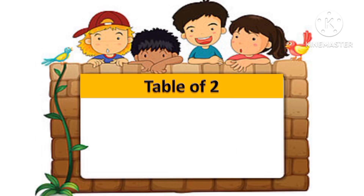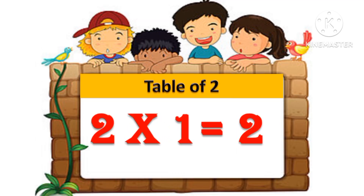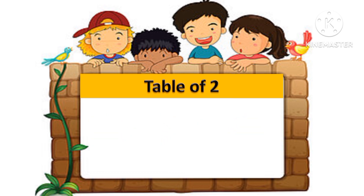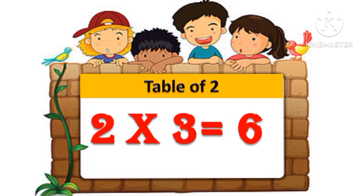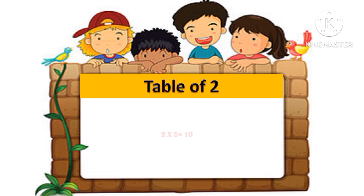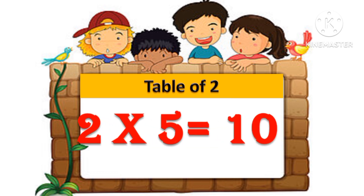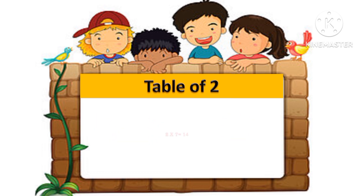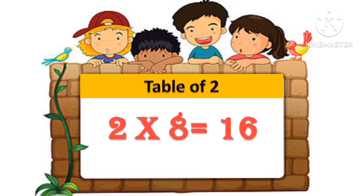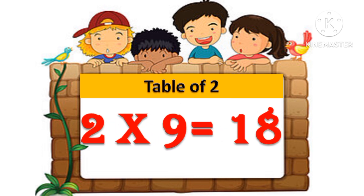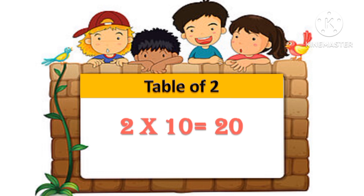Table of 2. 2 1s are 2. 2 2s are 4. 2 3s are 6. 2 4s are 8. 2 5s are 10. 2 6s are 12. 2 7s are 14. 2 8s are 16. 2 9s are 18. 2 10s are 20.